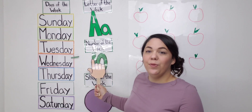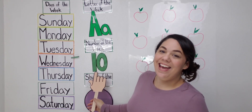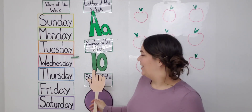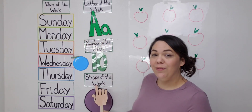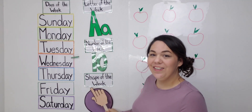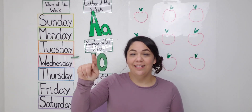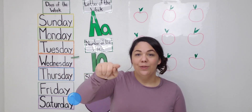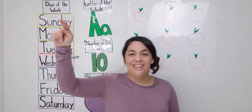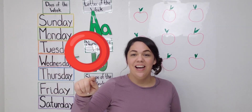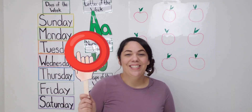Our number of the week is 10. And our shape of the week is a circle. Can you make a circle in the air like this? Boop, boop, boop, boop, boop, boop, boop. Circle. Good job. That was easy peasy.